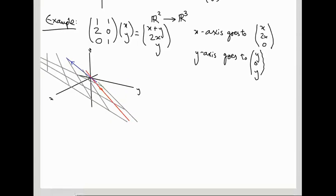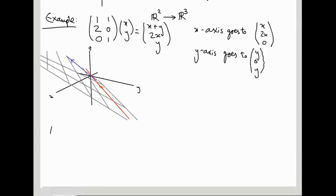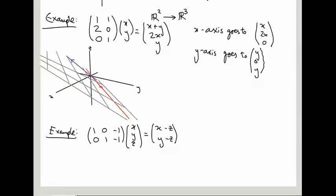Let's do an example of the other kind, an example that goes down a dimension. Let's take 1, 0, minus 1, 0, 1, minus 1. This is now going to go from R³ to R². It's going to eat x, y, z and it's going to return x minus z, y minus z. So whenever I do this I'm trying not to do it by using a formula. I'm trying to do it by saying it's this entry times this entry, this entry times this entry, this entry times this entry summed up etc.